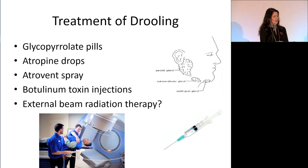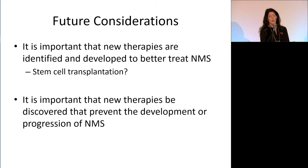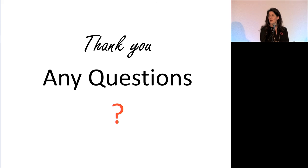In conclusion, non-motor symptoms are really frequent and important symptoms of Parkinson's disease that can occur at all stages — often more so later, but certainly at any stage. Some of them actually help diagnose Parkinson's. Treatment exists for some, and it's certainly worth discussing them with your neurologist if they are bothering you. We need to come up with new therapies because some are not adequately treated at this point. People ask about stem cell transplantation and work is being done in this area. Not only should we find new medications to treat these symptoms, but to prevent them from happening in the first place. Thanks very much.